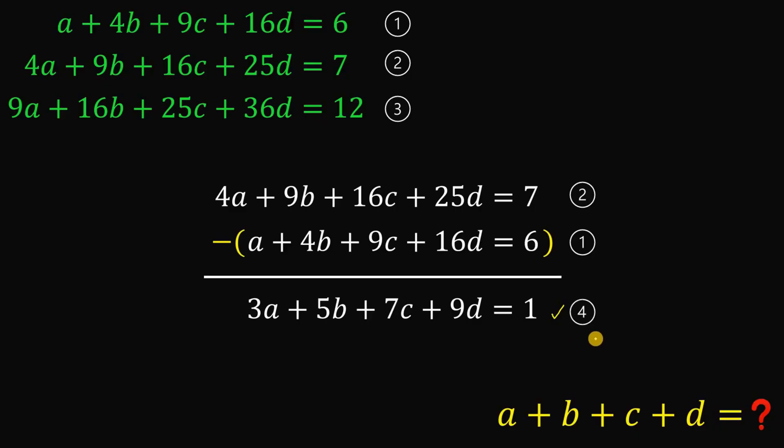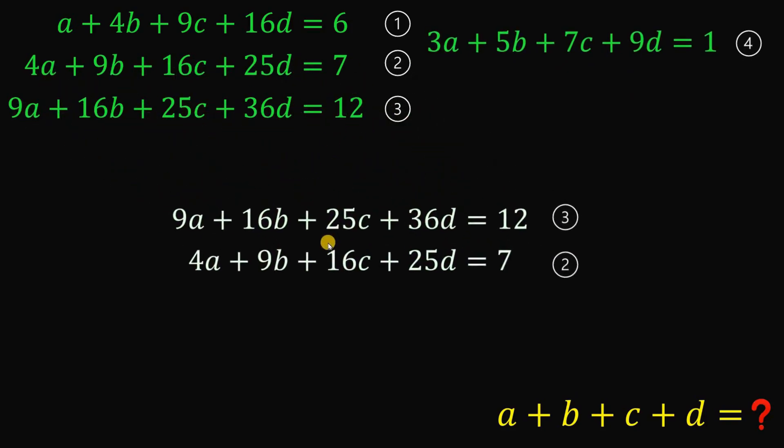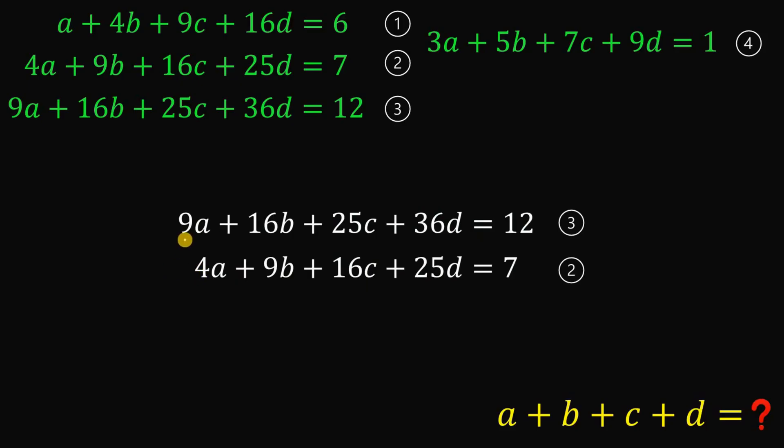Now let's set aside this result. Let's get equation 3 and equation 2. Again, we will subtract equation 2 from equation 3. If we do that, we get 5a plus 7b plus 9c plus 11d equals 5. Let's call this result equation number 5.